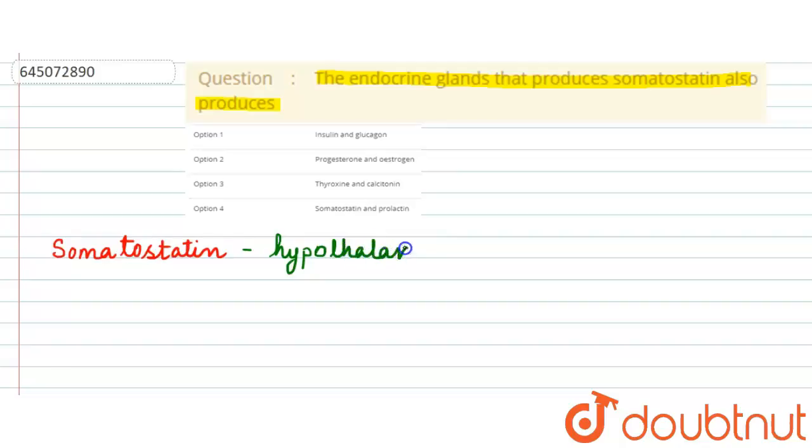And what it does, basically, the somatostatin from the hypothalamus inhibits the pituitary gland secretion, or you can say it inhibits the secretion of pituitary gland hormones, which are namely growth hormone and TSH, that is thyroid stimulating hormone. So somatostatin is the one which is inhibiting the secretion of these two hormones.